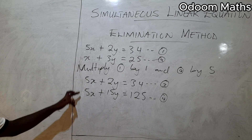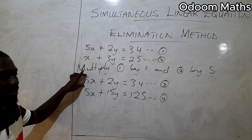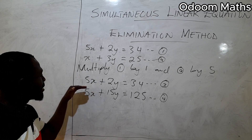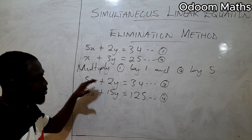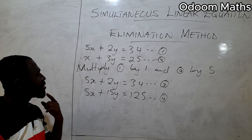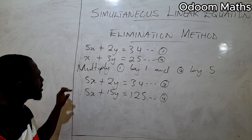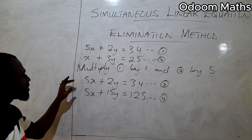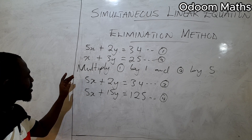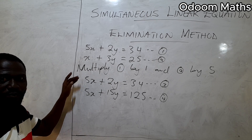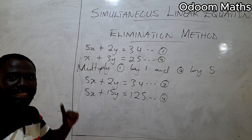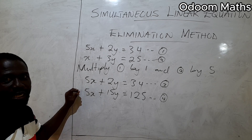Now the coefficients of x are the same in both equations, so we can subtract. Note: for the elimination method, if the variable being eliminated has the same sign in both equations — both positive or both negative — we subtract. If one is positive and one is negative, we add.